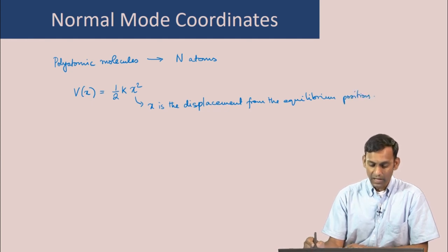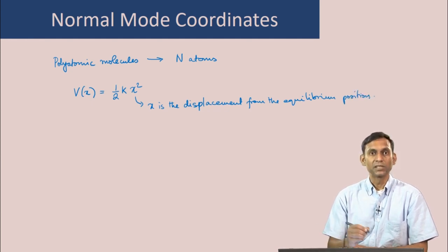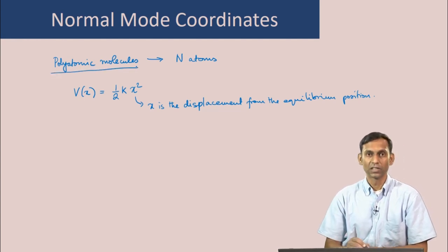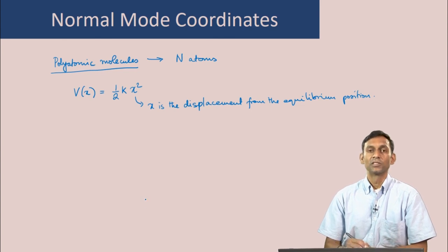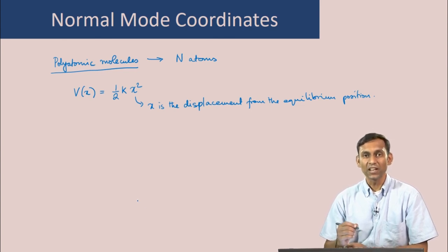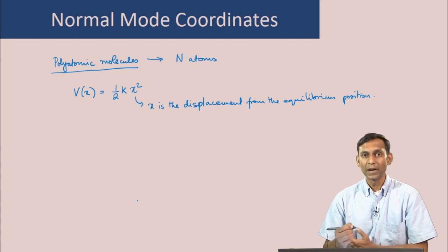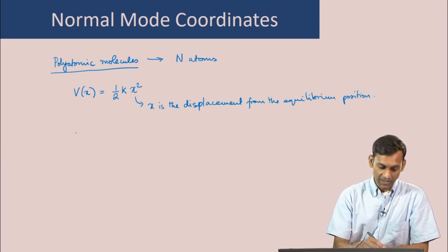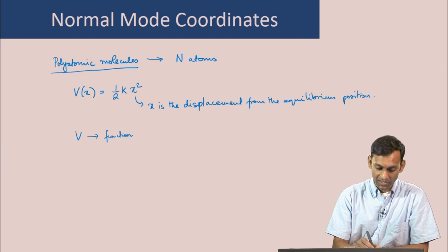Let us now see what happens in the case of polyatomic molecules when there are n atoms. In this case, the potential energy in general depends on the position of all n atoms. In other words, the potential energy V is a function of n coordinates.